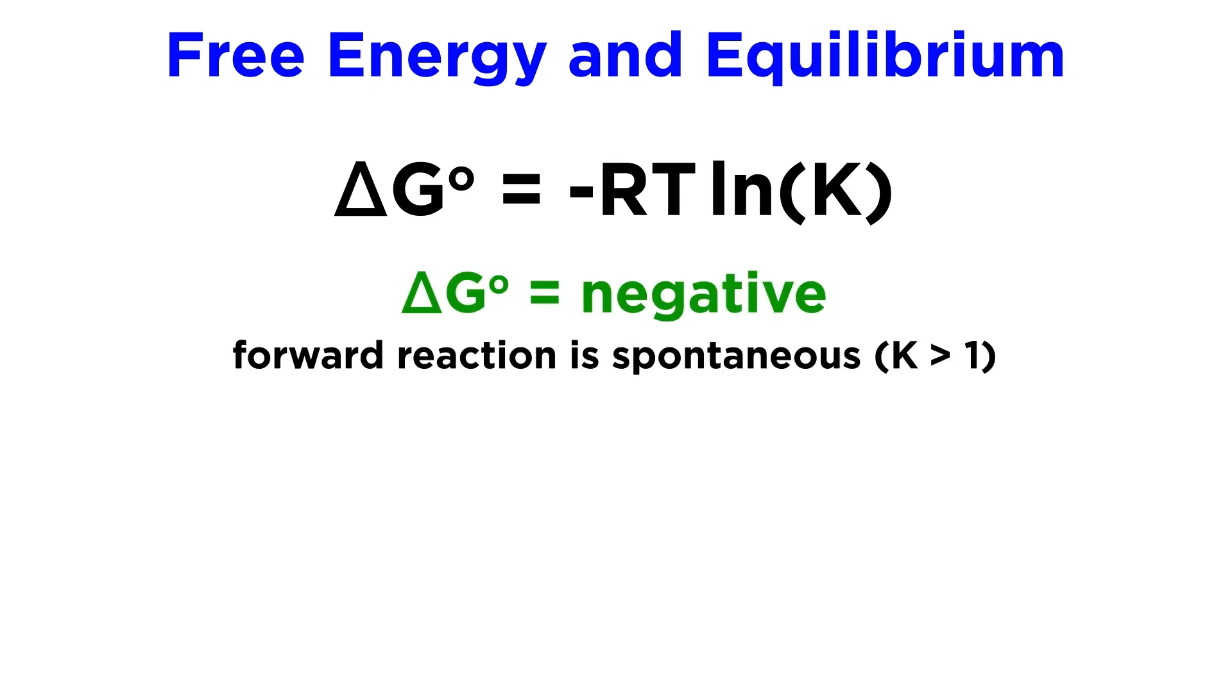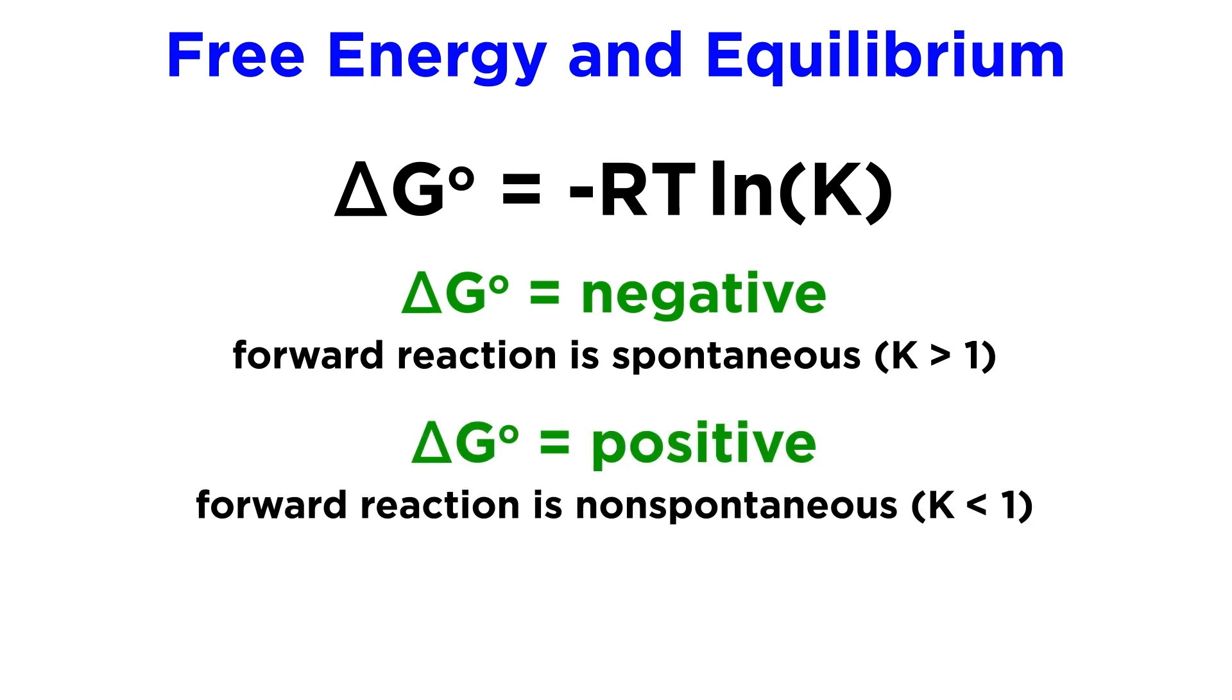This will relate to spontaneity in the sense that when this value is negative, the forward reaction is spontaneous, and the products are favored, which means the equilibrium constant must be greater than 1. If it's positive, the forward reaction is non-spontaneous, and the reactants are favored, which means the equilibrium constant must be less than 1.